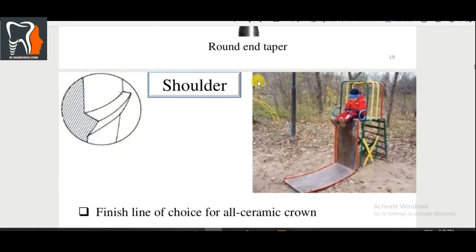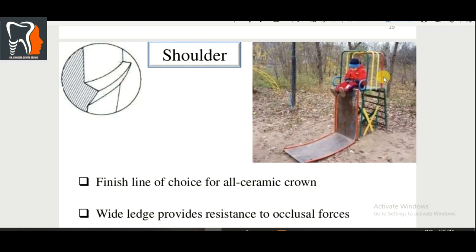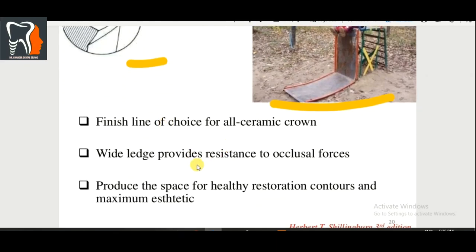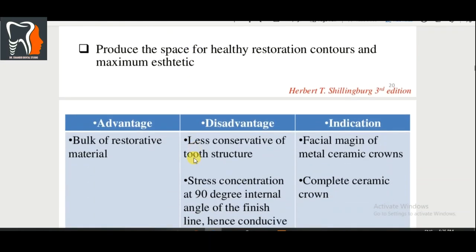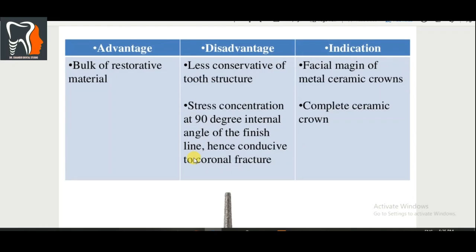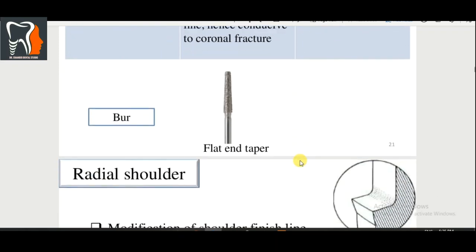Shoulder: this provides a 90-degree angle at the finish line. It is the finish line of choice for all-ceramic crowns. The wide ledge provides resistance to occlusal forces and produces space for healthy restoration contours and maximum aesthetics. Advantage: bulk of restorative material. Disadvantage: less conservative of tooth structure and stress concentration at the 90-degree internal angle, which can lead to crown fracture. Indication: facial margin of metal-ceramic crowns and complete ceramic crowns. Bur: flat-end taper.